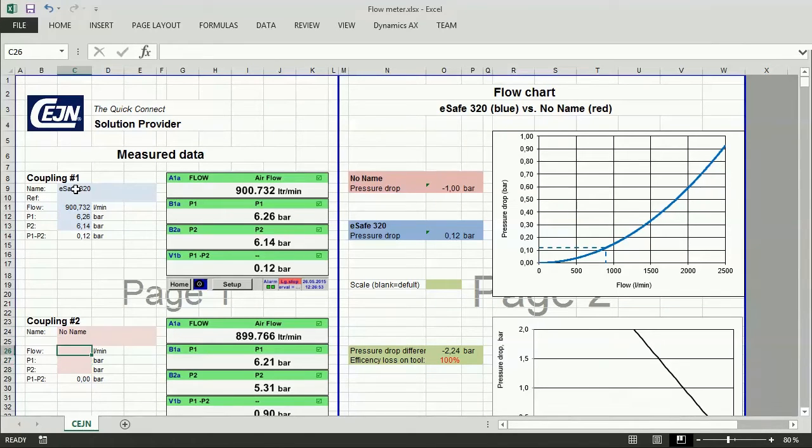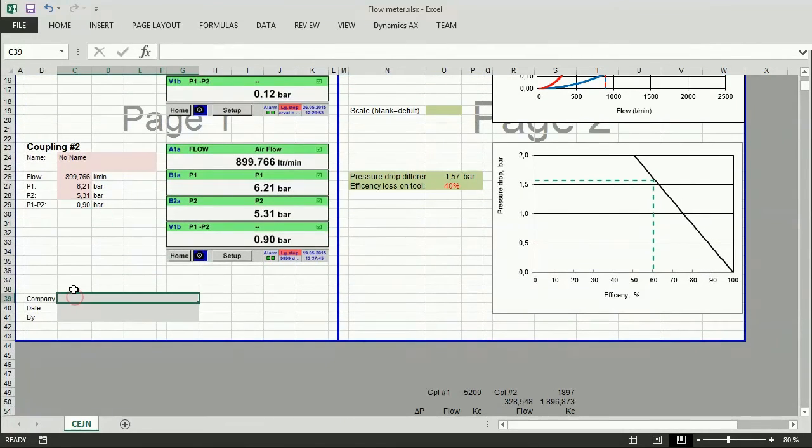On the right side, you can see the graph showing you all the flow in the system as well as the efficiency loss of the tool. Key in the company name, date, and done by.